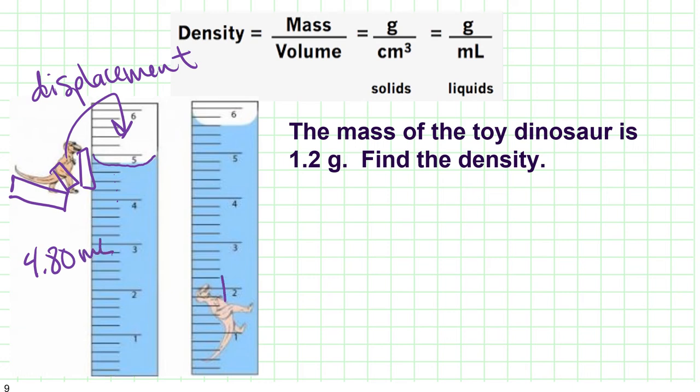The dinosaur's volume is going to push the water up an equal volume. So now I have 5.2460. Again, we need that uncertain figure. 5.60 milliliters. So if I do 5.60 minus 4.80, it looks like the volume of my dinosaur is 0.80 milliliters.